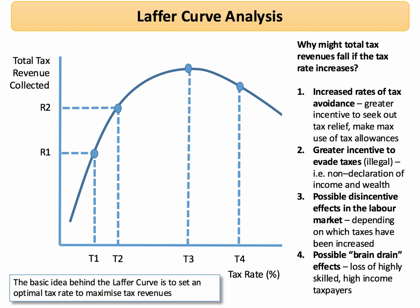There's also an incentive to evade taxation. Whilst tax avoidance is legal, tax evasion is illegal. The classic example is when people earn an income — for example from a job — but don't declare it to the tax authorities: non-declaration of income and wealth.